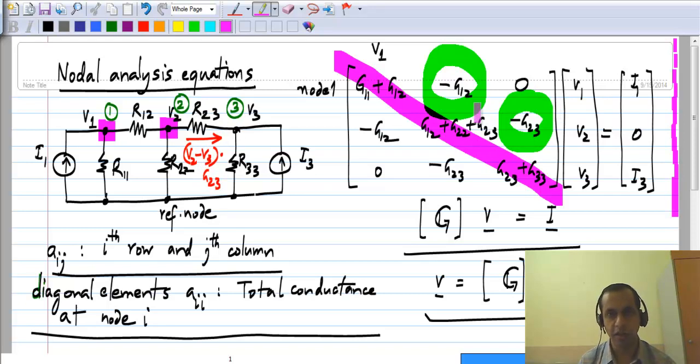And also another thing that you observe is that the matrix is symmetric. Clearly, we have minus G12 over here and minus G12 there, minus G23 there and minus G23, and similarly 0 and 0. This 0 is because there is no conductance directly connected between node 1 and node 3. So there is 0 conductance connected between them.